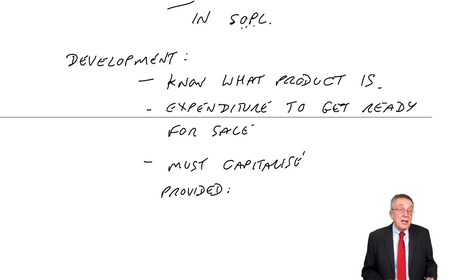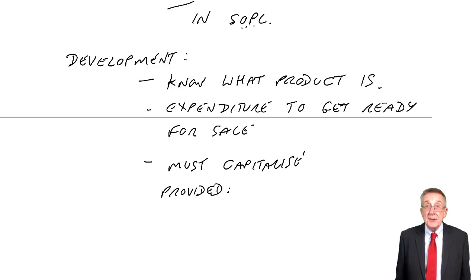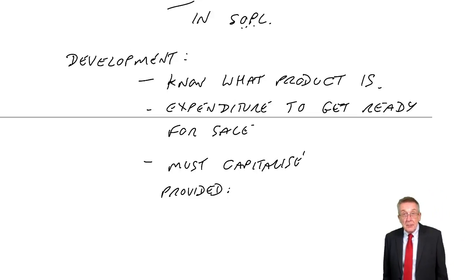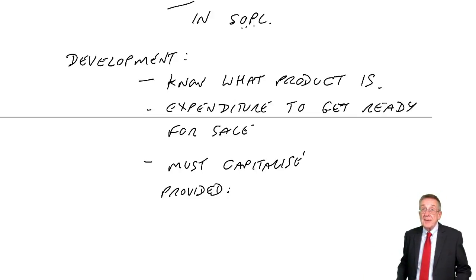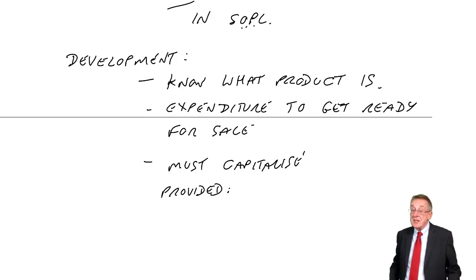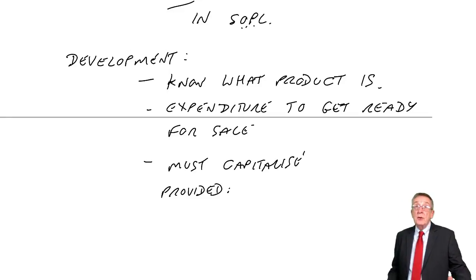So, there we are. Research always is an expense in the statement of profit or loss. Development must be shown as an asset on the statement of financial position, provided those four conditions apply.